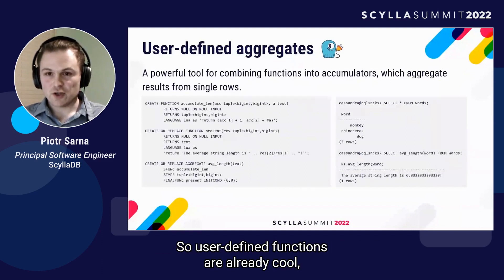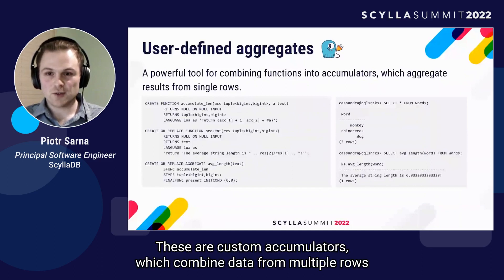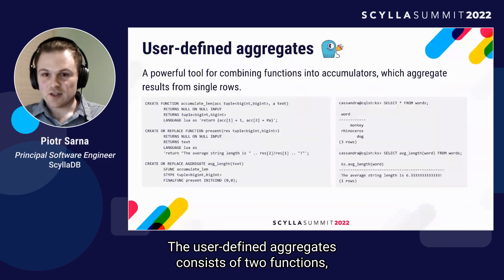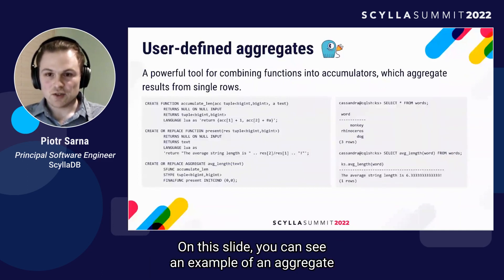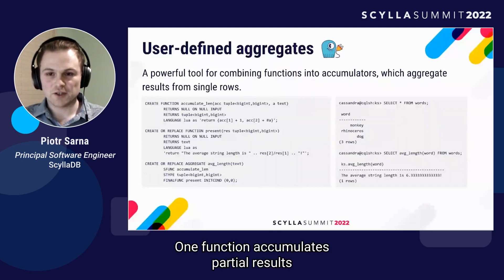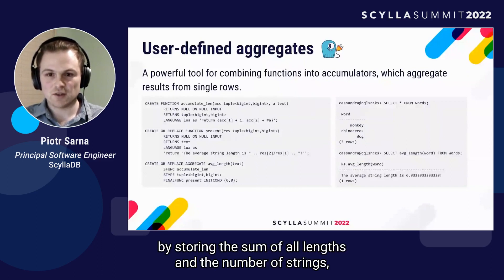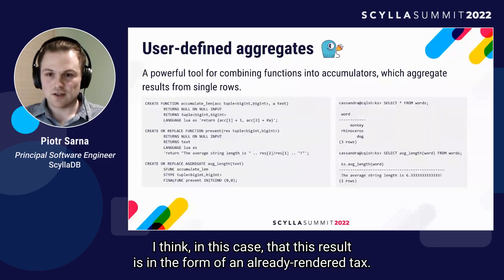User-defined functions are already useful, but their most important purpose is enabling user-defined aggregates. These are custom accumulators which combine data from multiple rows into potentially complex outputs. User-defined aggregates consist of two functions: one for accumulating the result for each argument, and one for finalizing the result and transforming it to the output type. On this slide you can see an example of an aggregate that computes the average length of all requested strings. One function accumulates partial results by storing the total sum of all lengths and the total number of strings, and the finalizing function divides one by the other to return the result, in this case as already-rendered text.